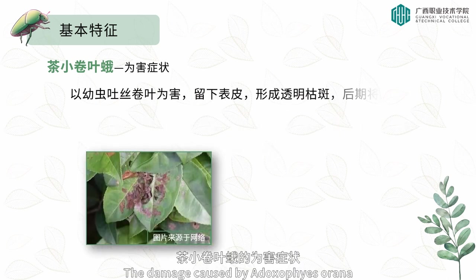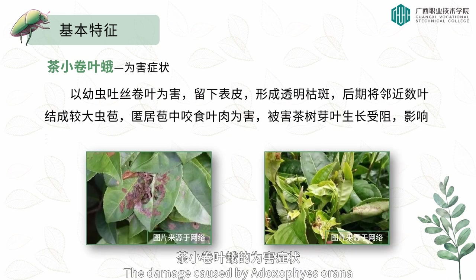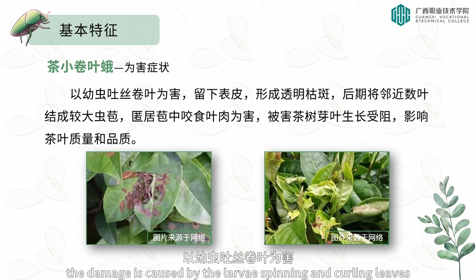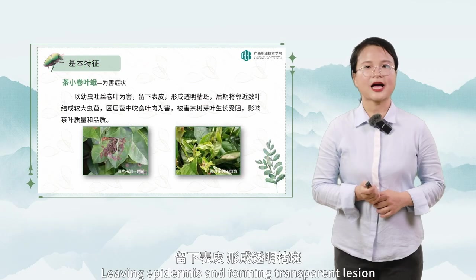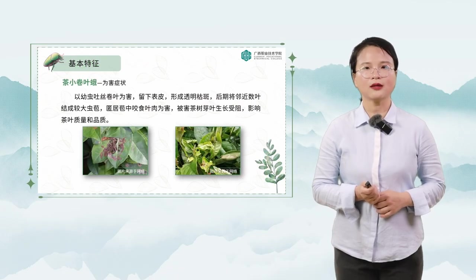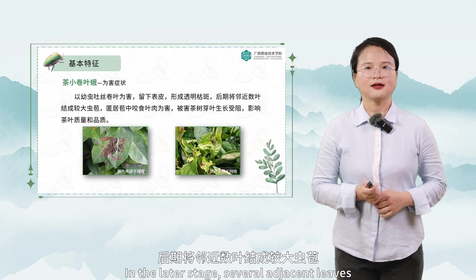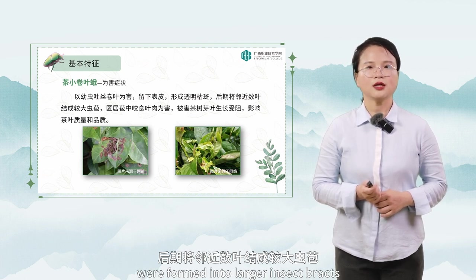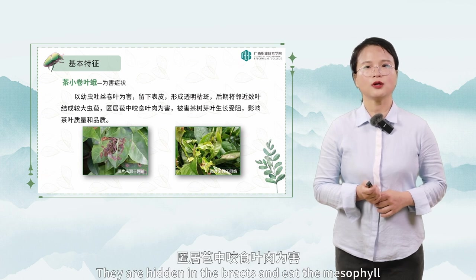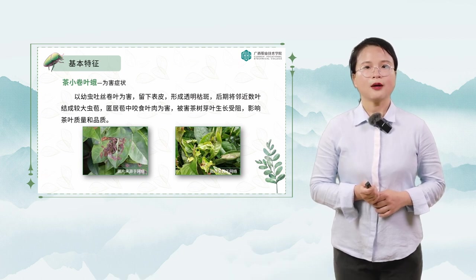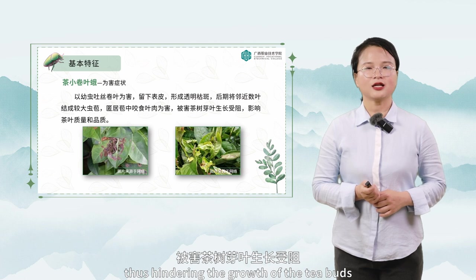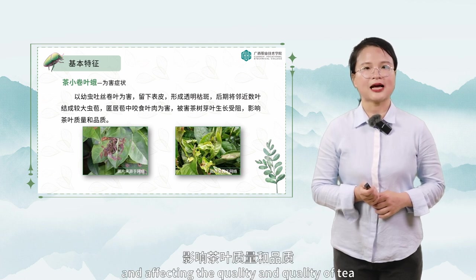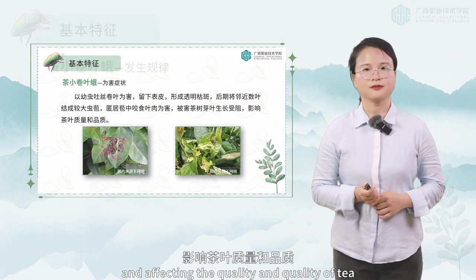The damage caused by Adoxiphes orana is caused by the larvae spinning and curling leaves, leaving the epidermis and forming transparent lesions. In the later stage, several adjacent leaves are formed into larger insect bracts. The larvae hide in the bracts and eat the mesophyll, thus hindering the growth of tea buds and affecting the yield and quality of tea.